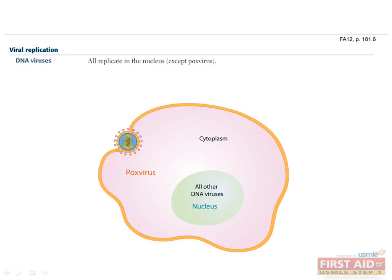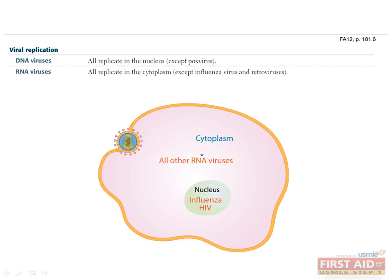DNA viruses, except pox viruses, enter the nucleus and use the host cell DNA-dependent RNA polymerase to synthesize mRNA from its negative-stranded template. Pox virus has its own DNA-dependent RNA polymerase and therefore doesn't need to replicate in the nucleus using host cell polymerase. Hepatitis B virus is unique because its double-stranded genome contains single-stranded regions scattered throughout; it contains a reverse transcriptase — an RNA-dependent DNA polymerase — that must synthesize a DNA strand before entering the nucleus. RNA viruses, except influenza and retrovirus, replicate in the cytoplasm.